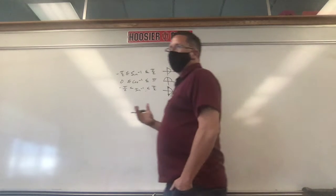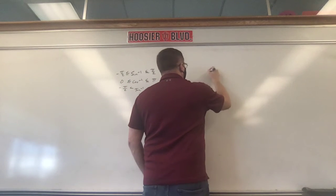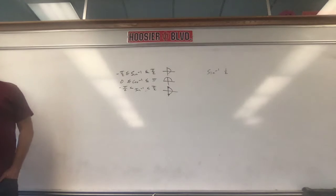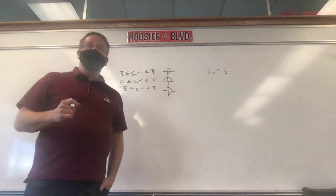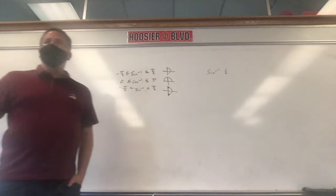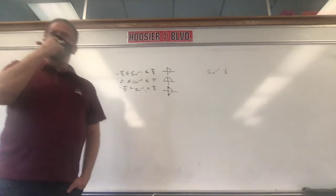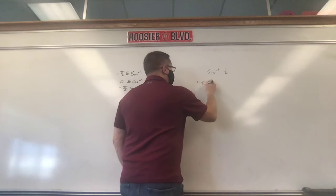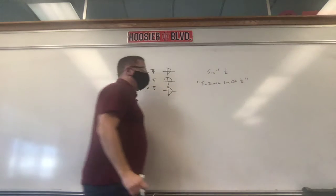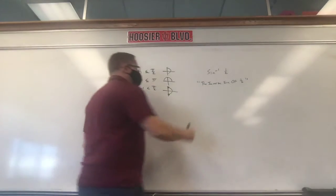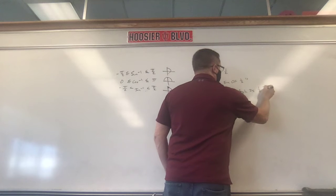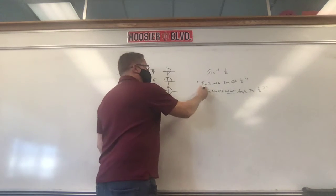On your next test, I'm very likely going to put this on and say: write in words what this says and what it means. For example, if you say 'sine to the negative first power of a half,' that's not it. The correct way to read it is 'the inverse sine of one-half.' And what that means is: the sine of what angle equals one-half?